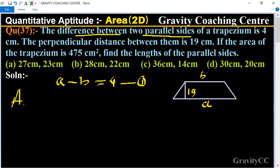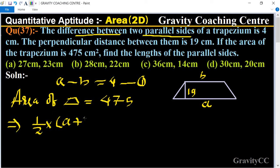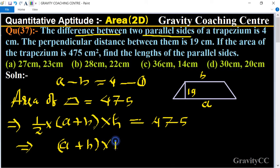And the area of trapezium is given, area of trapezium equal to 475. We know that the formula of area of trapezium is one upon two multiply sum of parallel sides means a plus b multiply h equal to 475. So this implies that a plus b multiply 19 equal to 475 multiplied by 2.